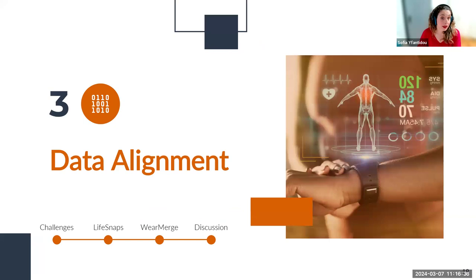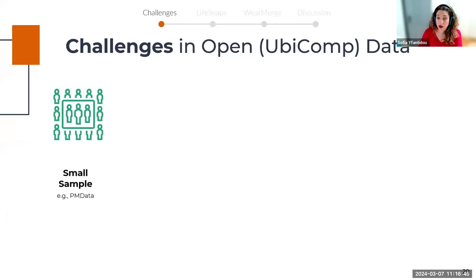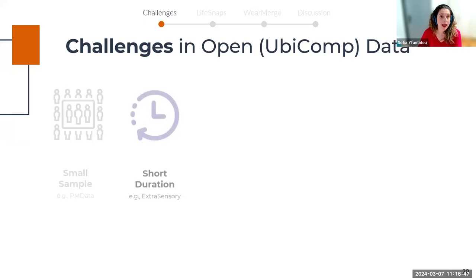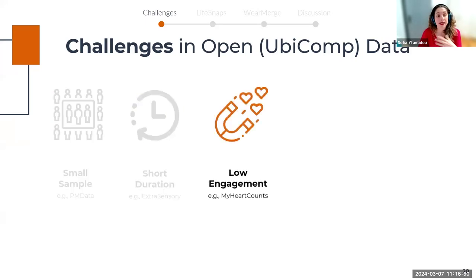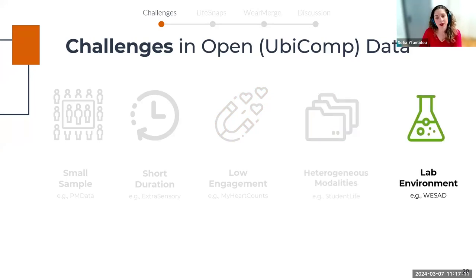Next, we move to data alignment. We need to understand the challenges related to ubicomp time series data. Most datasets have a small sample size and short duration. Even for datasets of large size and long duration, there are many missing values resulting from low user engagement. Ubicomp data are also sourced from heterogeneous modalities — different sensors or devices and manufacturers — making integration extremely cumbersome. Many open datasets are collected in restricted lab settings, meaning they do not necessarily represent authentic user behavior.